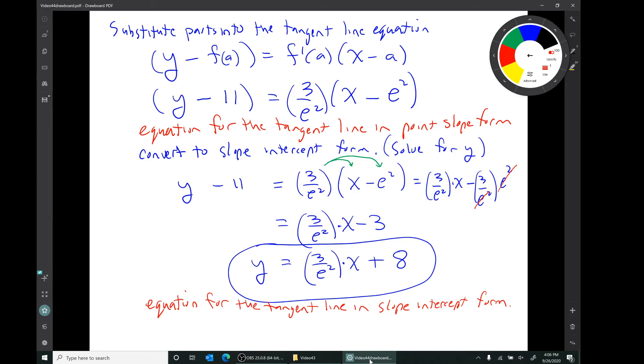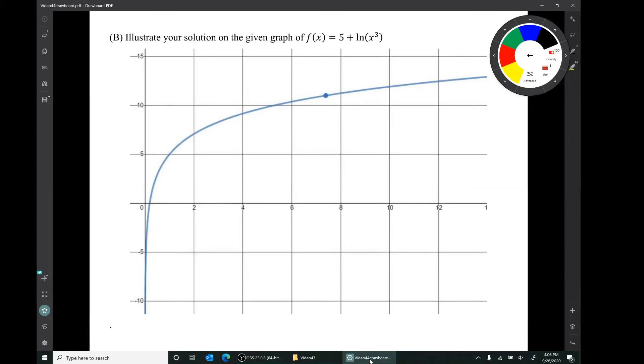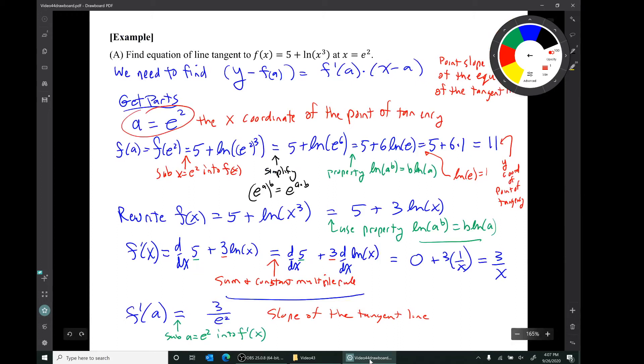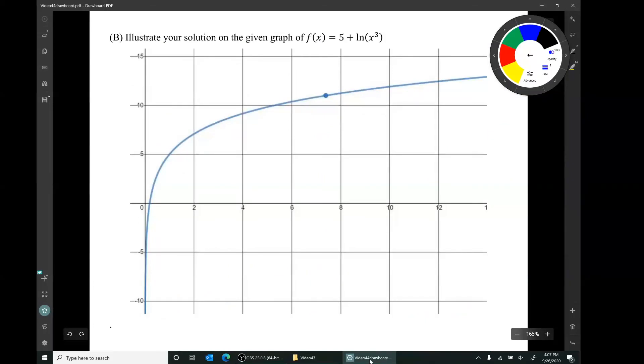There's a part b for this problem. Part b is to illustrate our solution on the given graph of the function f(x) = 5 + ln(x³). We're going to have to draw the tangent line. But let's first label the points. Remember, we have a point of tangency. We know its x,y coordinates. The x-coordinate of the point of tangency is e². That should be a number. Well, e is close to 3, so e² is close to 9. The y-coordinate is the number 11. f(a) was the number 11. So the x,y coordinates of the point of tangency are x = e², y = 11.